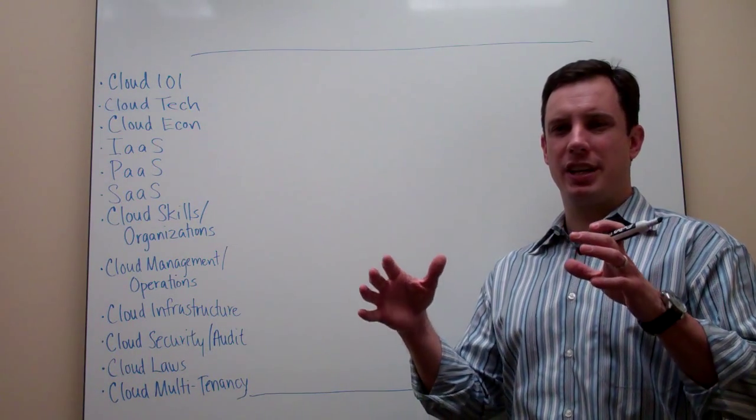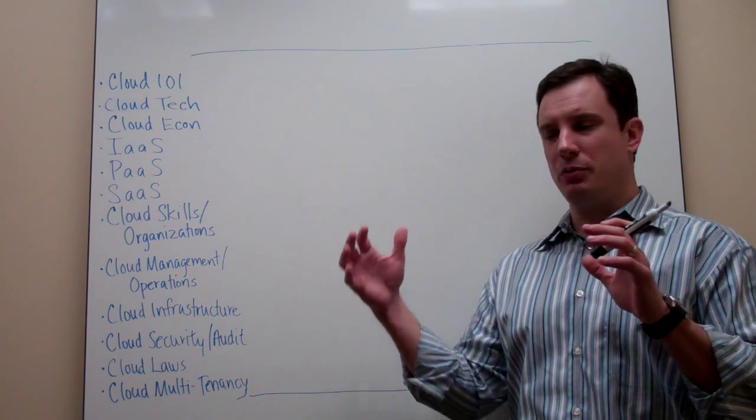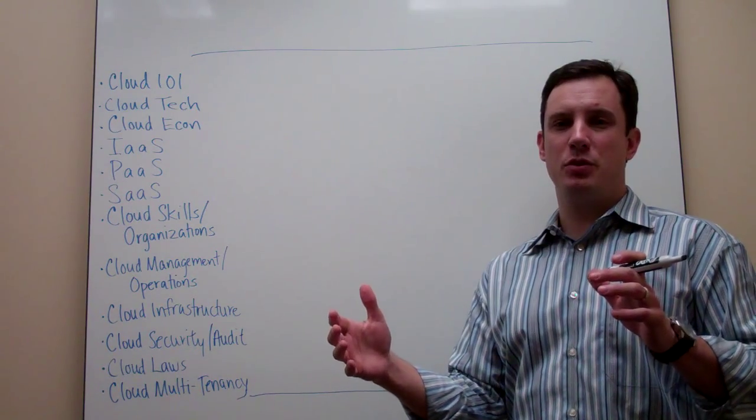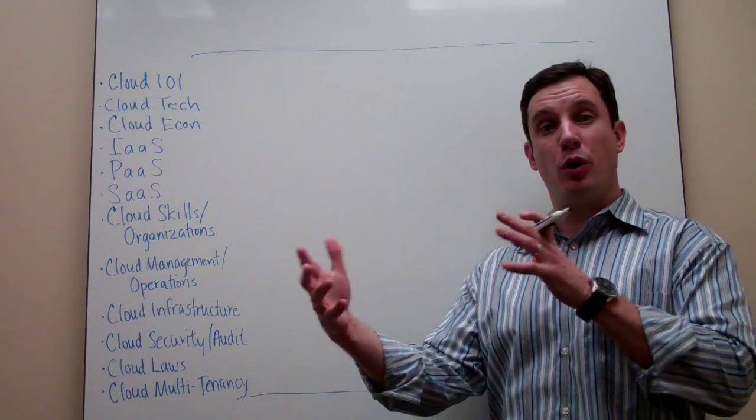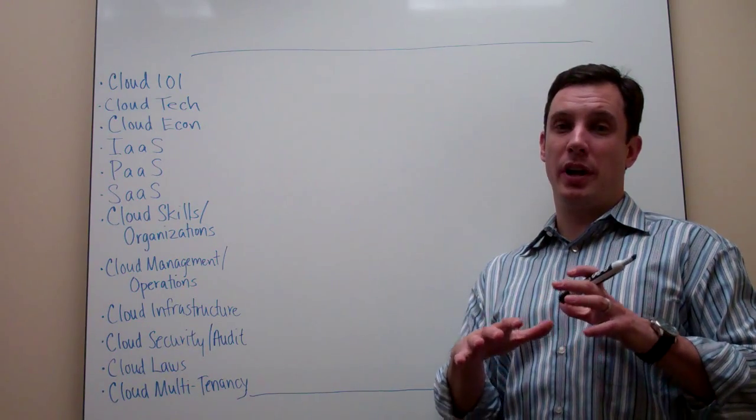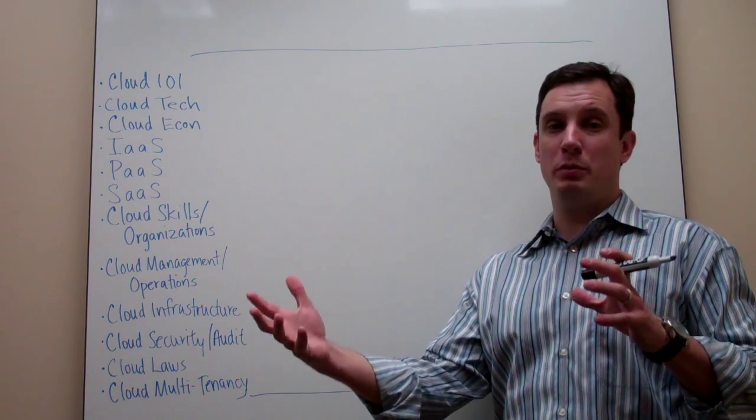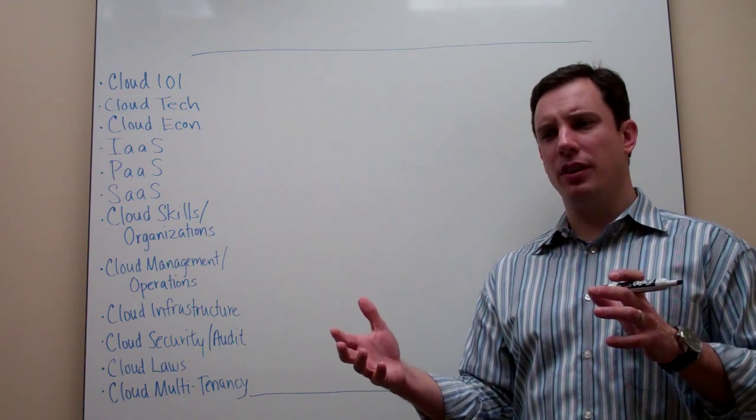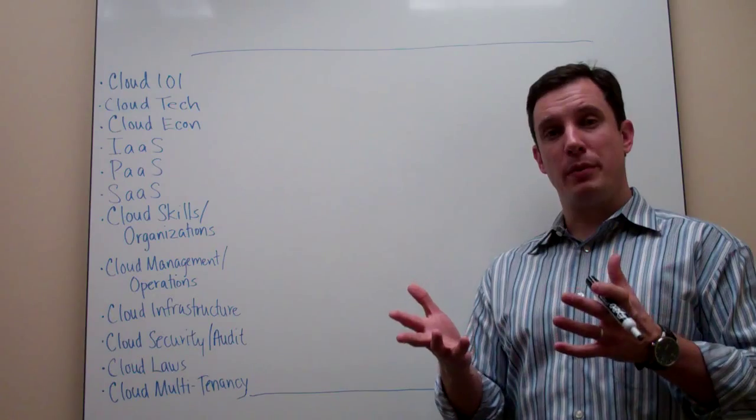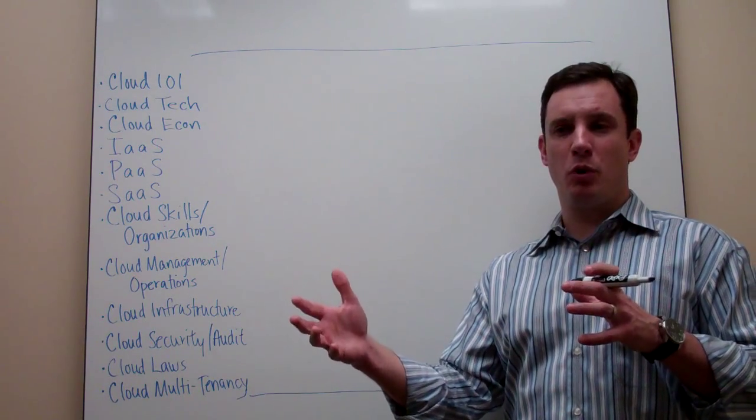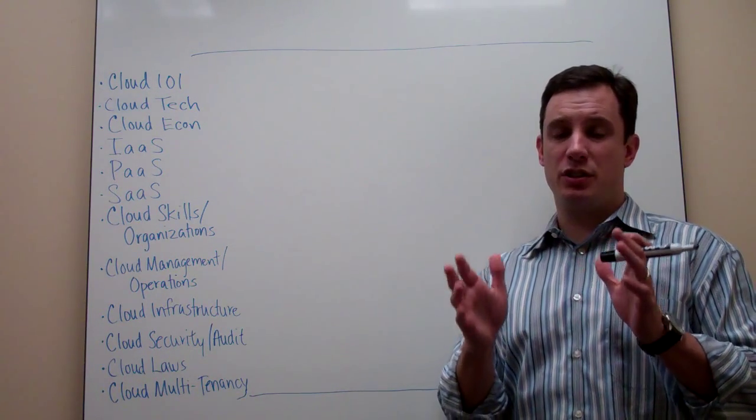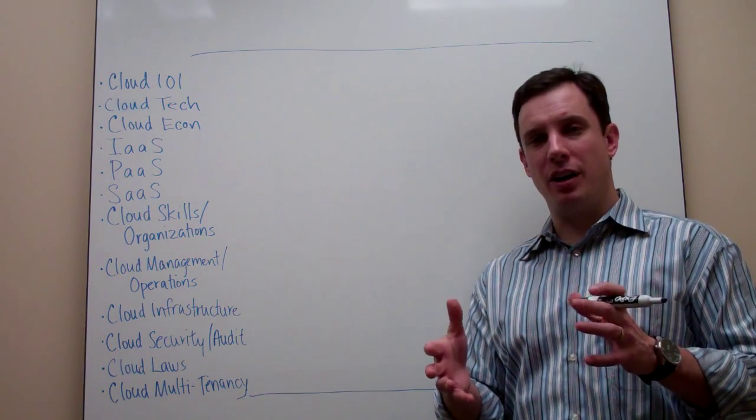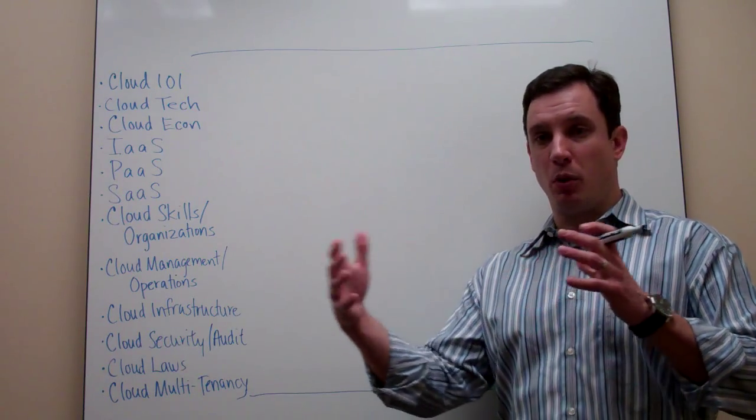And really the distinguishing characteristic is some of it's architectural, and we'll talk about what it means, the architecture of a Platform as a Service environment. Some of it has to do with whether they are closed environments or open source environments. Some of it has to do with whether they run in public clouds only or they will be supported in private clouds. And then also the last characteristic tends to be which programming languages or which programming frameworks do they support.